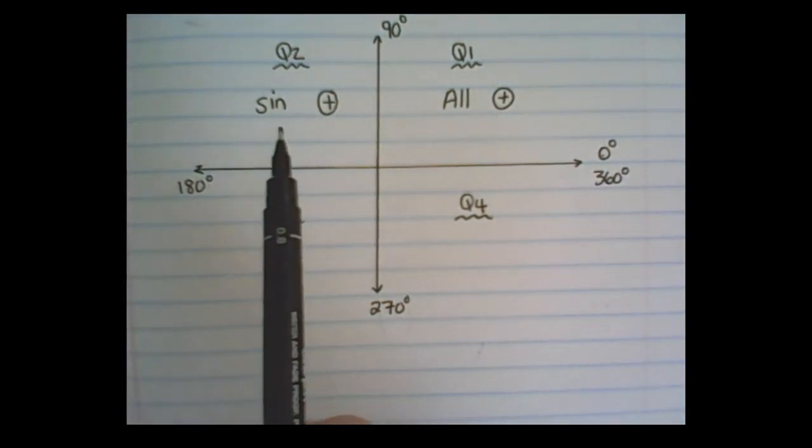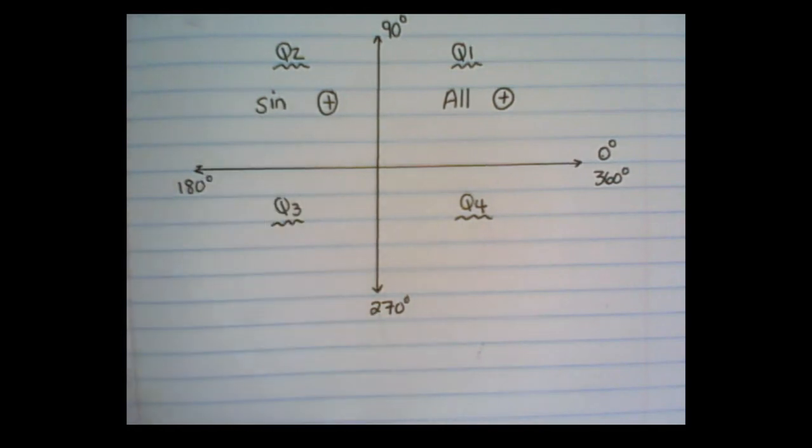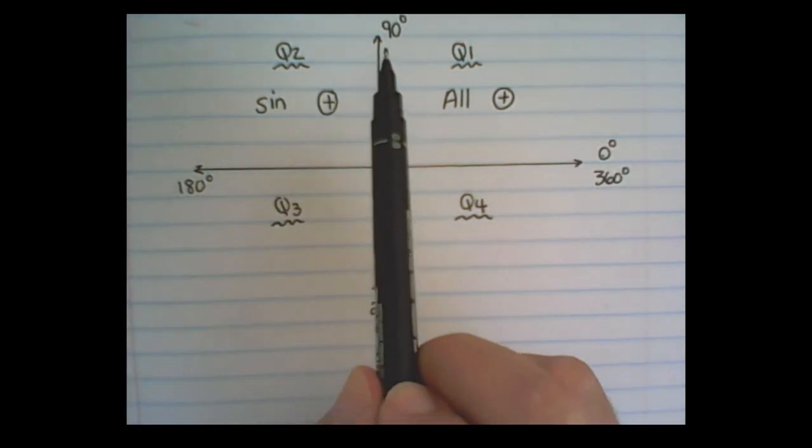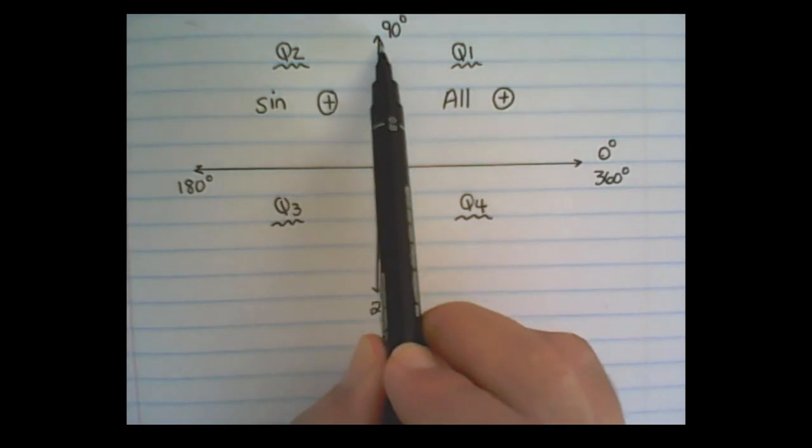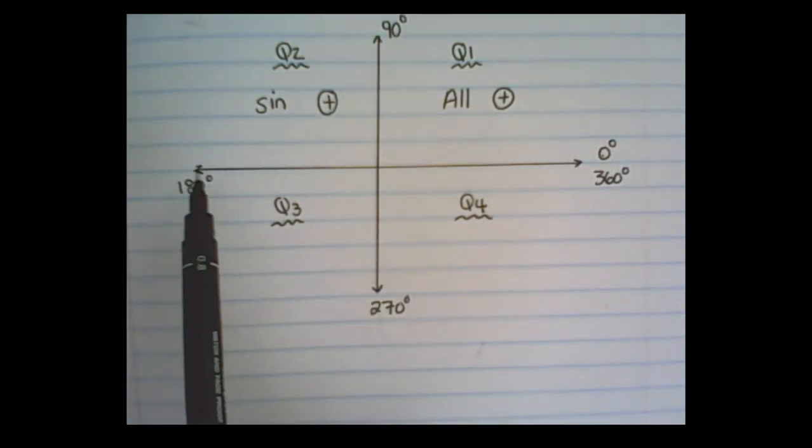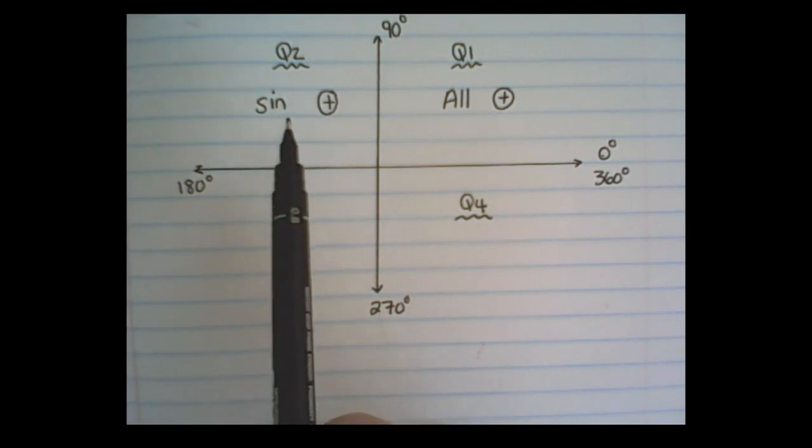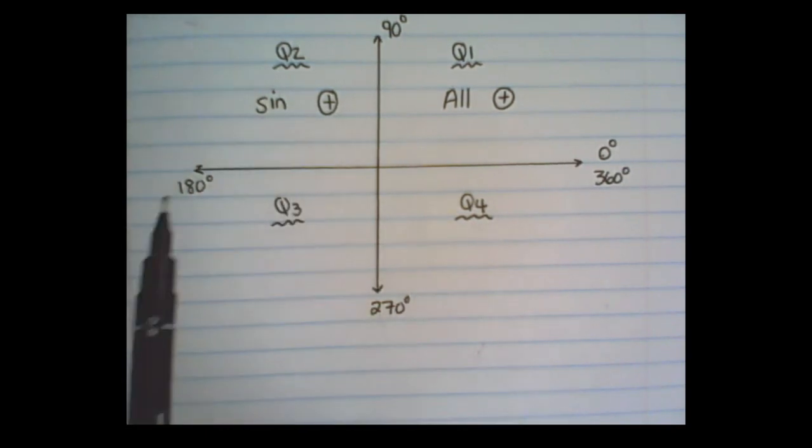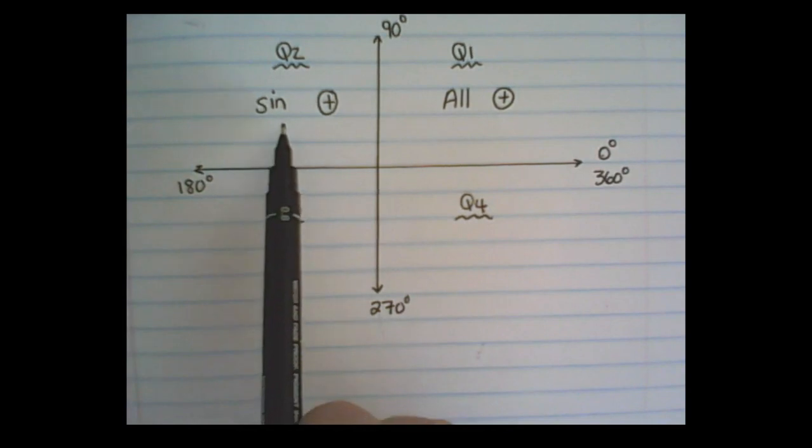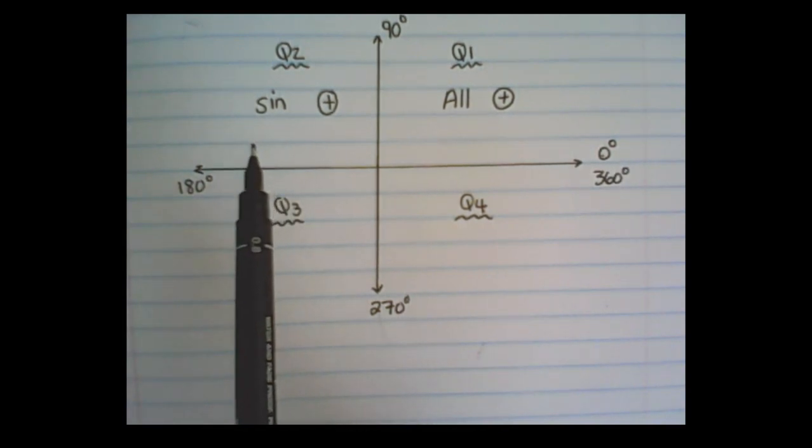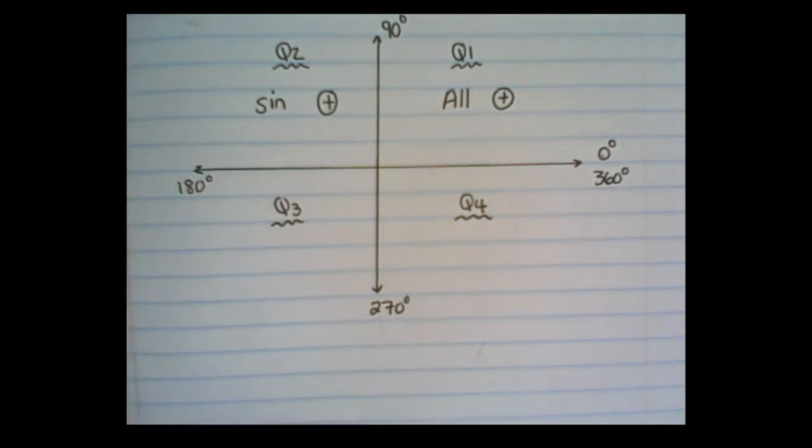In the second quadrant, I only have sine as positive. But for cos and tan, it will give us a negative answer.